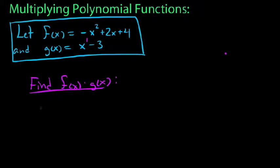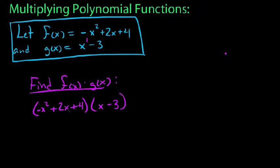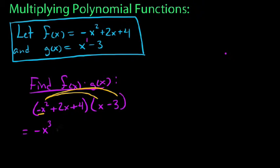We're going to start by doing this horizontally. When we write these things out, it's important that we put them in parentheses — that is, we quantify them. So f of x is negative x squared plus 2x plus 4, and we're taking this times g of x, which in parentheses looks like this. To find this product, we're going to use the method of exhausting everything on the left. Starting with negative x squared, we distribute it through the entire second set of parentheses. Negative x squared times positive x gives us negative x cubed. Then negative x squared times negative 3 gives us positive 3x squared. So now negative x squared is exhausted.